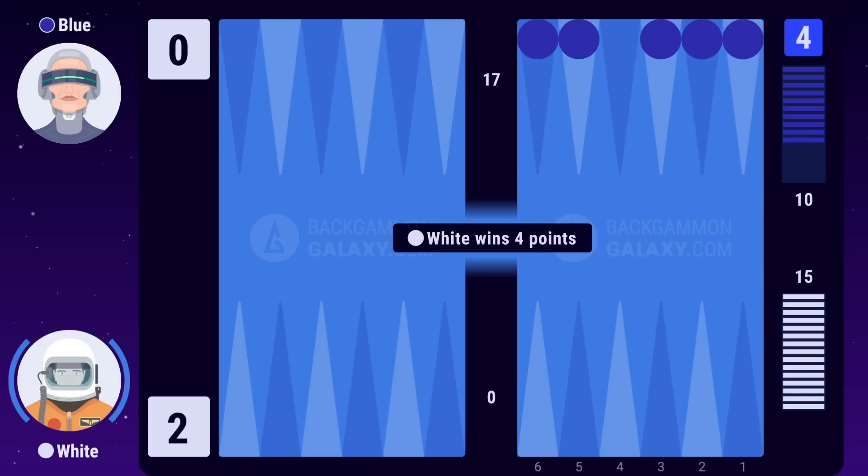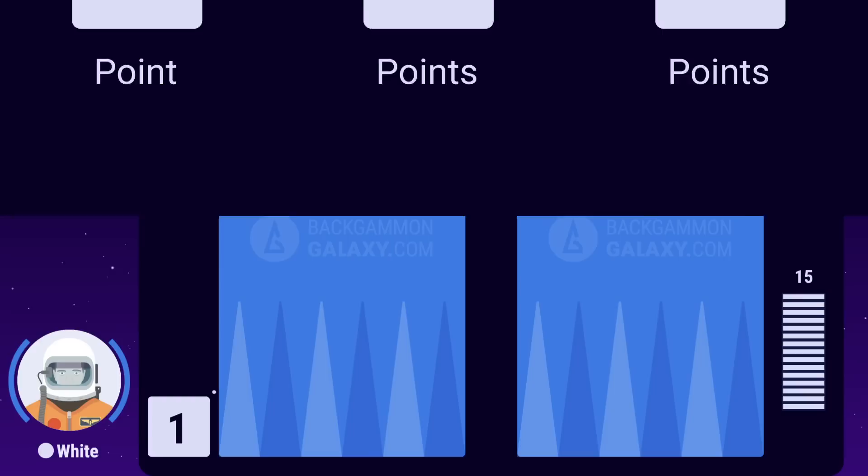Single, gammon, and backgammon. A single 1 point is when you have borne off all your checkers and your opponent has borne off 1 to 14 checkers.